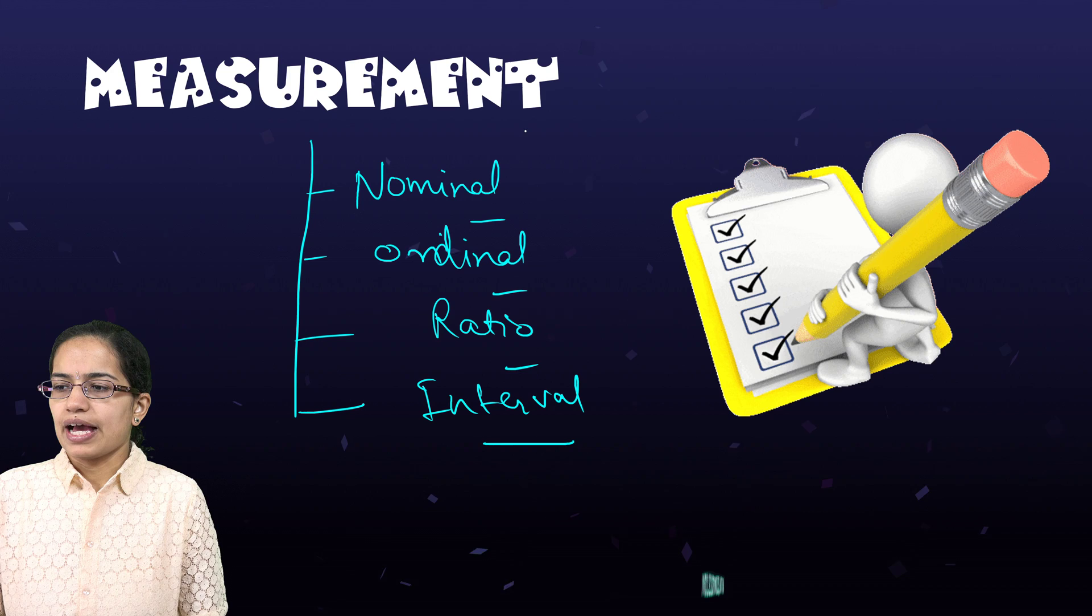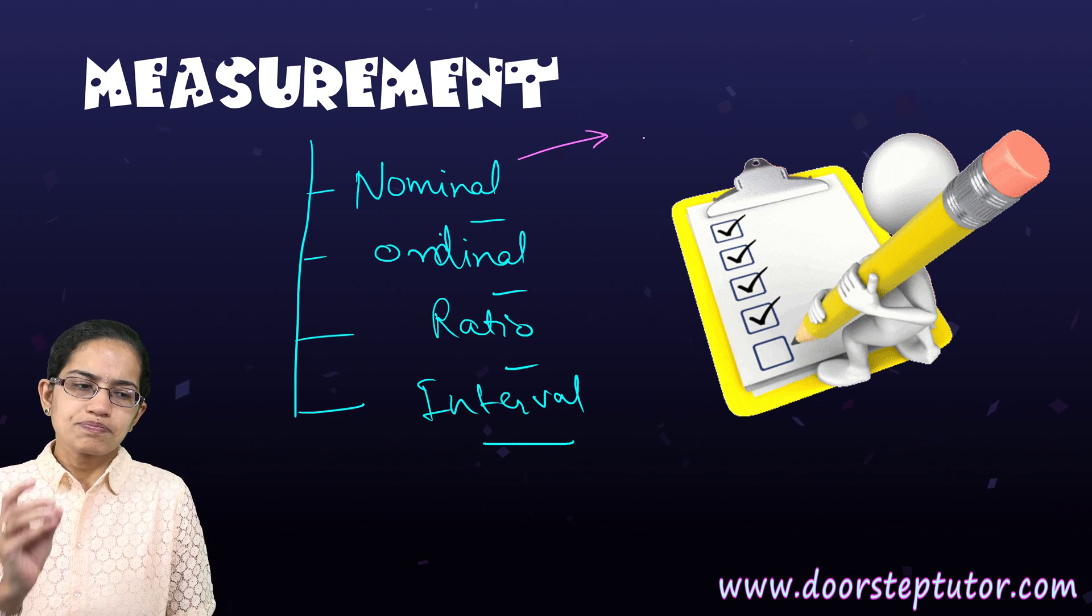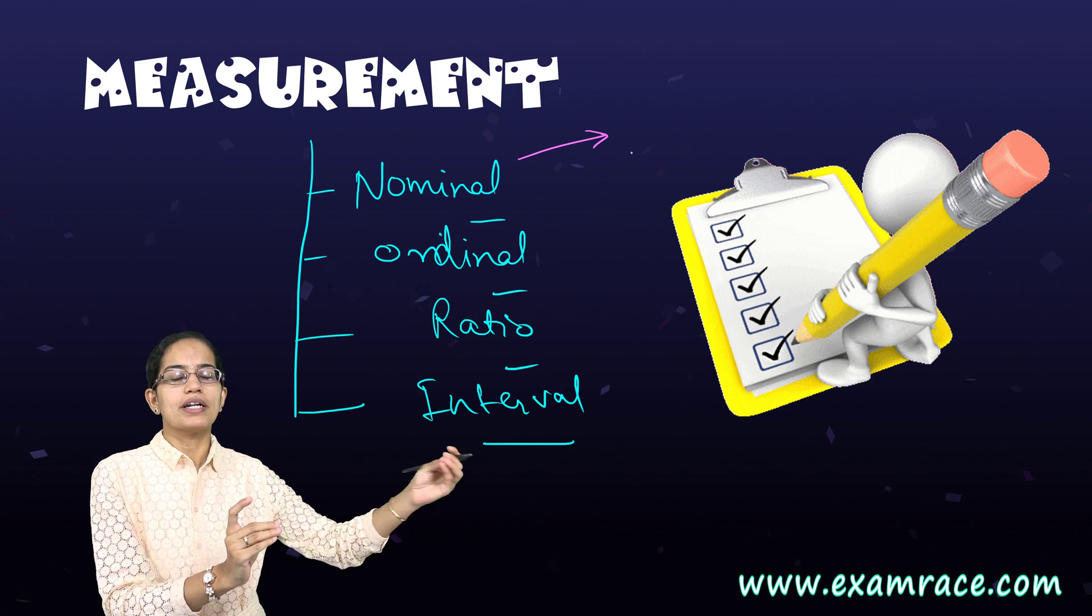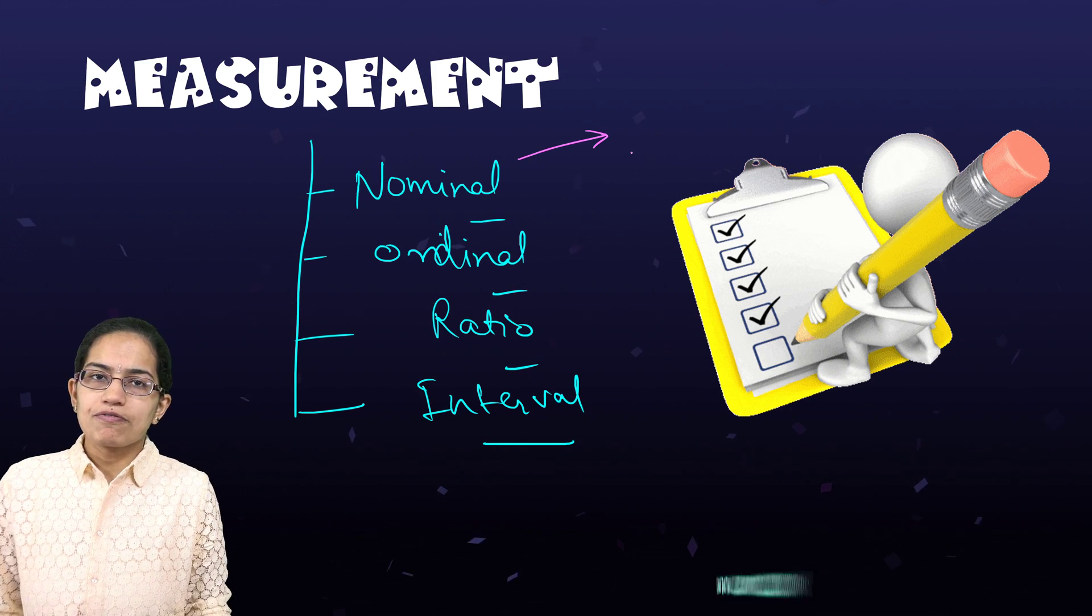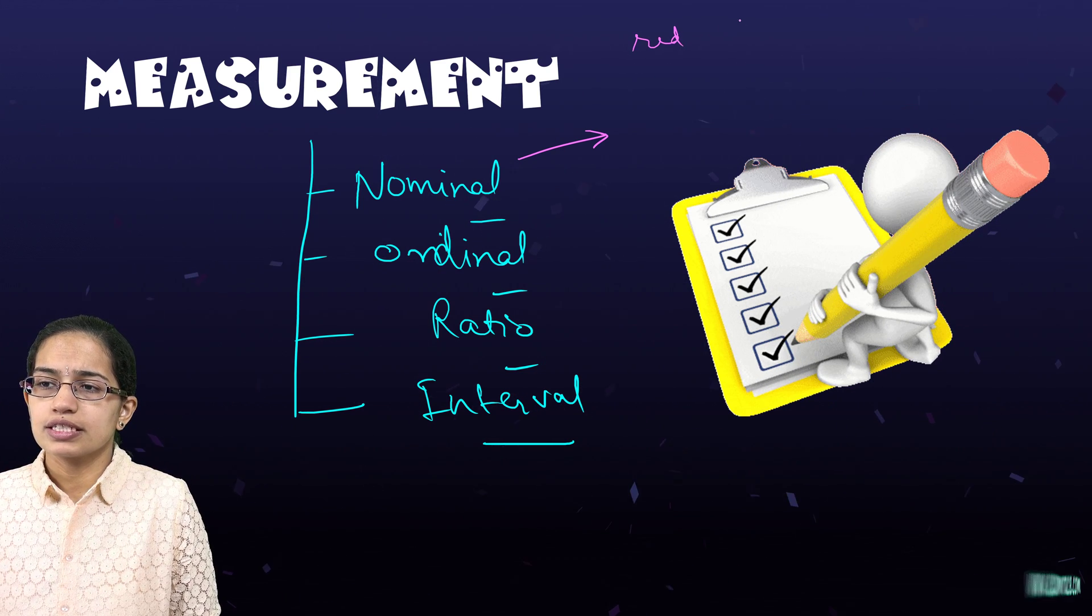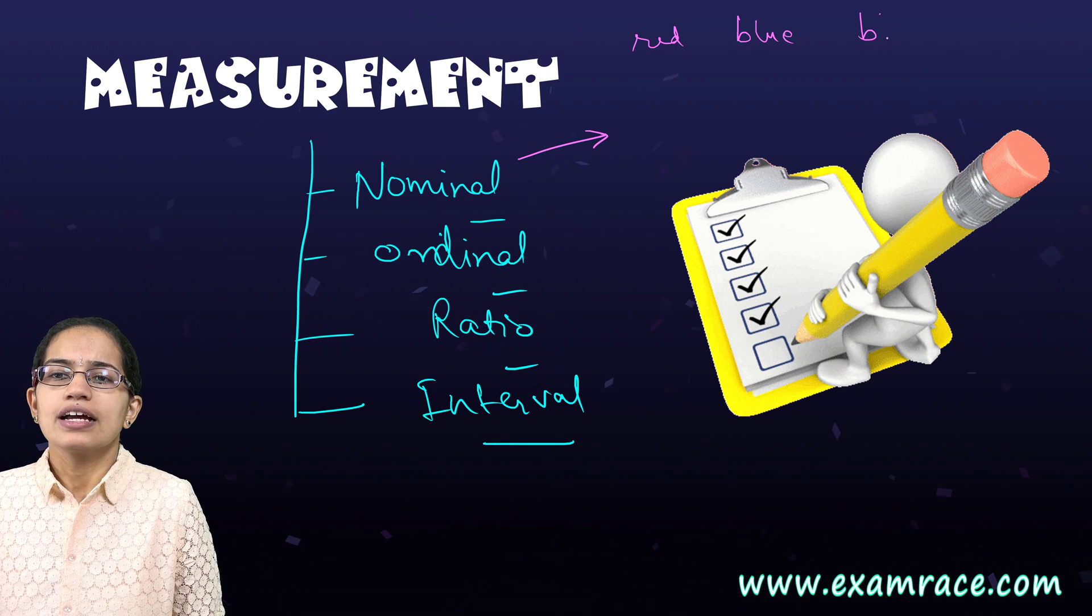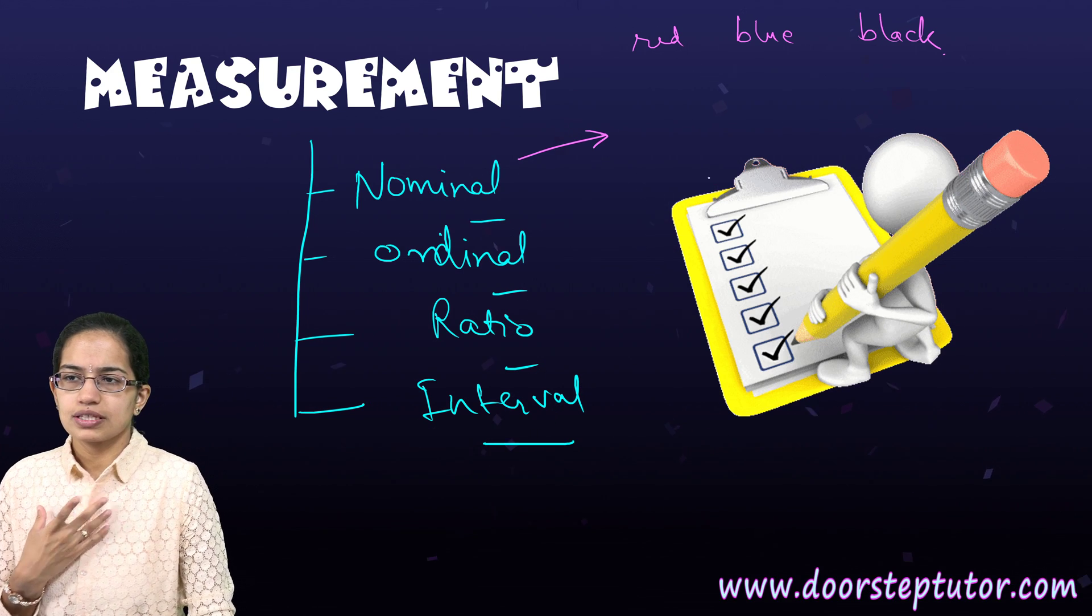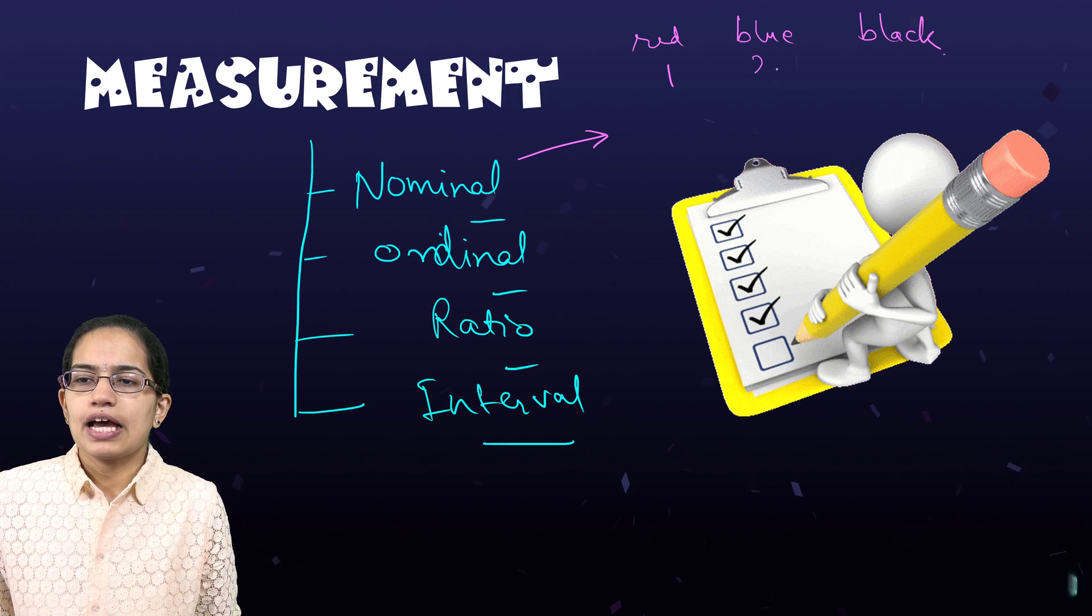Now how do we understand each of those? Nominal simply implies I'm giving certain, assigning certain things to a particular thing. For example, if every time while I'm explaining to you, I have to mention colors red, blue, black, it becomes very tedious for me.